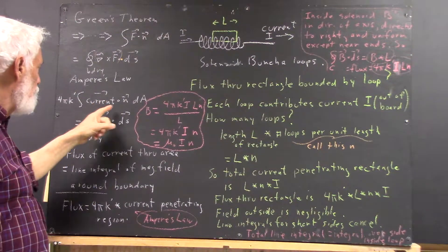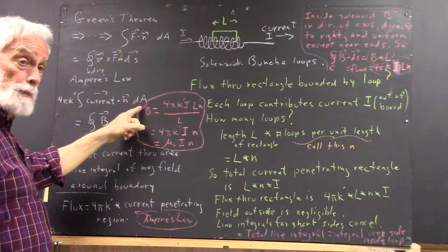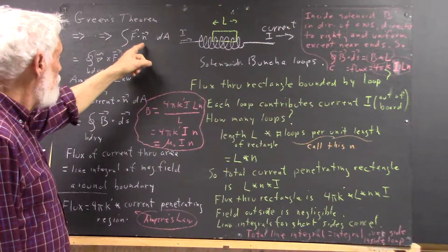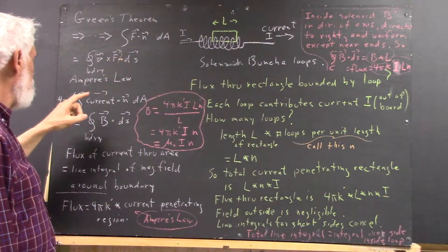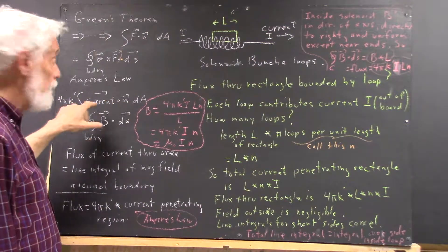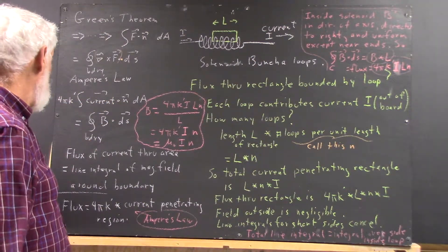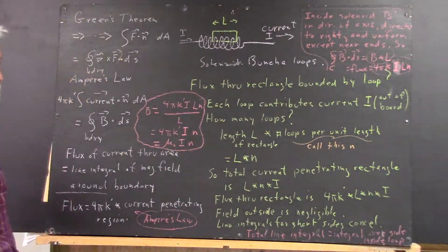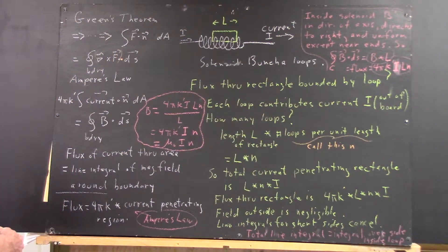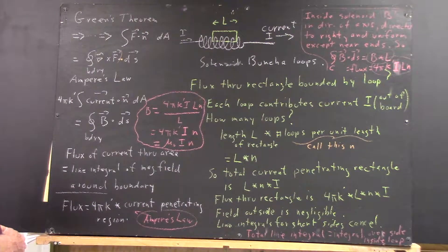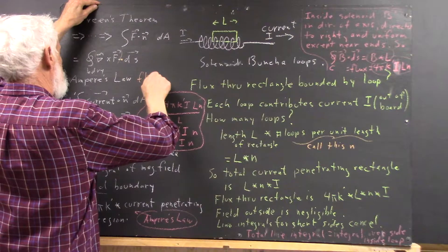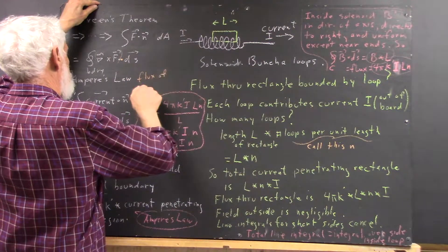You take the dot product of the current with the normal vector and multiply by the area. Okay, so instead of f dot n, you're doing 4πk' times the current dot n, and that is what we call your current flux. Okay. So this is flux of the current.